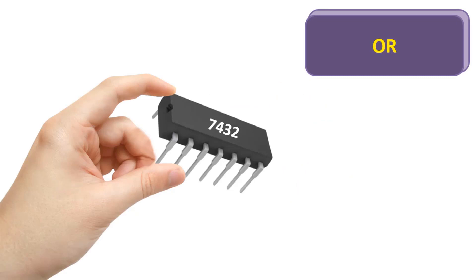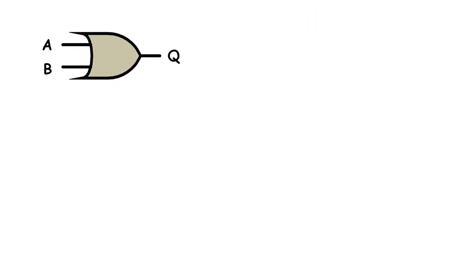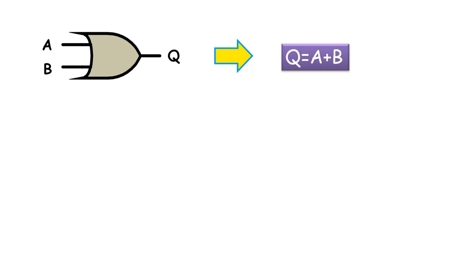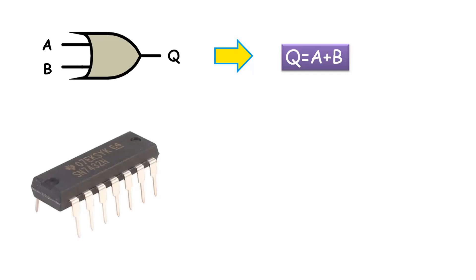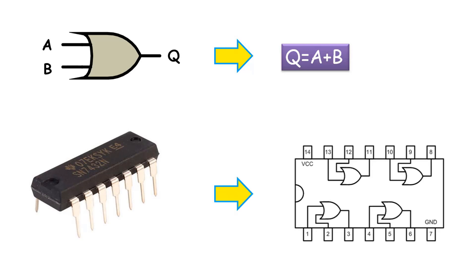Now let's look at the OR gate. Its symbol is like this, which can consist of one output and two or more inputs. In its mathematical expression, the output is represented as the sum of the inputs — that is, Q equals A plus B. The 7432 IC is the IC of this logic gate. When we look at its internal structure, we can see that this integration consists of four OR gates.